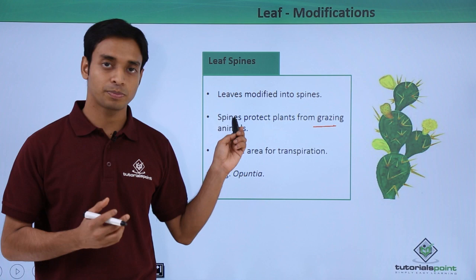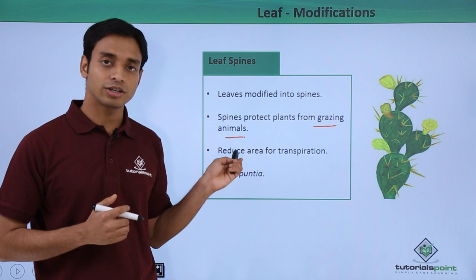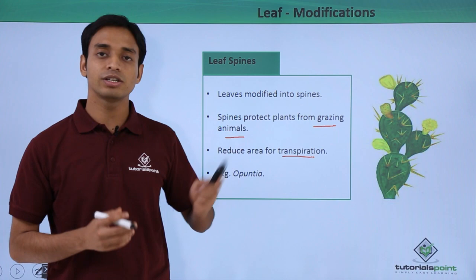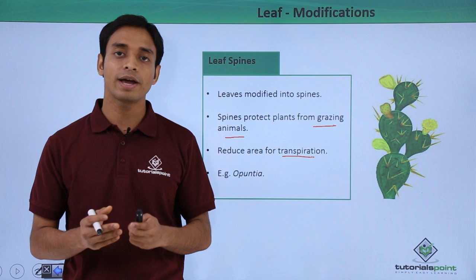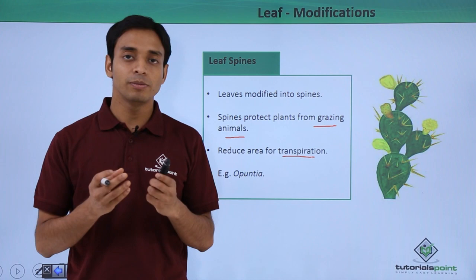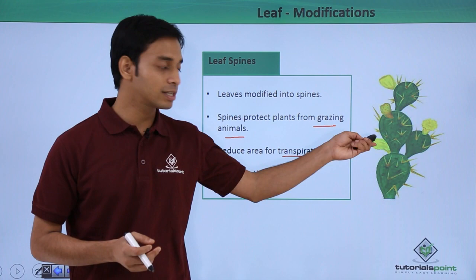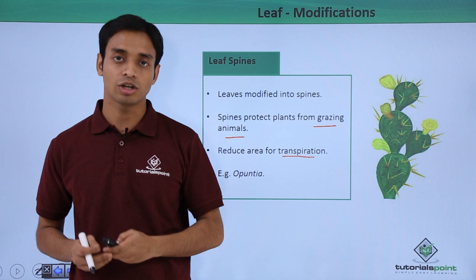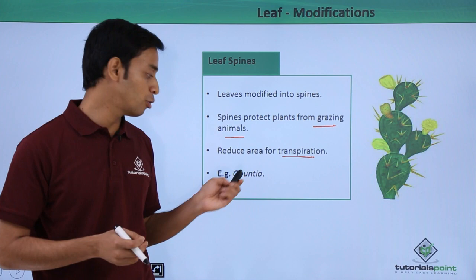A very important function of these spines is to reduce transpiration, that is water loss. This type of modification is mostly seen in plants found in xerophytic environments where there is a lack of water and very dry climates. If there are leaves, there will be loss of water due to transpiration; but when leaves are transformed into spines, they do not have stomata for transpiration and can check water loss. This is very important for xerophytic plants — for example, Opuntia.